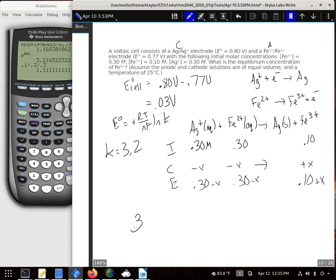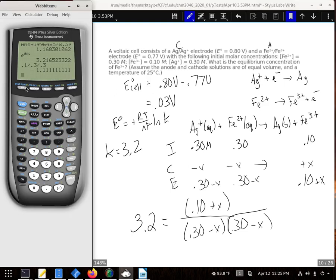So 3.2 is going to be equal to 0.1 plus X, all over 0.3 minus X and 0.3 minus X. And since I have the calculator here, I'm going to let it solve all this for me. So Y equals 0.1 plus X times 0.3 minus X to the negative second. Minus 3.2 gives me that. Minus 3.2 minus X, just hit graph, who cares what it looks like.